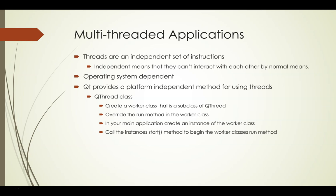Threads are independent — you can't access a variable created in one thread from another. So we have a main application running in one thread and our worker class running in a separate thread. What if we want to communicate between the two? What if we want our worker class to update a progress bar, or let us know when it's finished and return some data? We can't access variables directly, but we can communicate between threads using signals and slots. We can create custom signals — so far in this course we've used custom slots, but we haven't created our own custom signals.